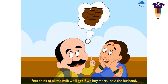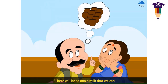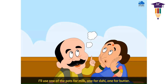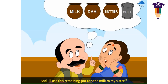'But think of all the milk we'll get if we buy more,' said the husband. 'That's true,' the wife agreed. 'There will be so much milk that we can even have plenty of dahi and butter and ghee. Wouldn't it be lovely? How lucky that I have all these earthen pots kept aside. I'll use one of the pots for milk, one for dahi, one for butter. The ghee I'll put in another jar, and I'll use this remaining pot to send milk to my sister.'